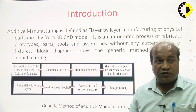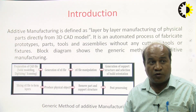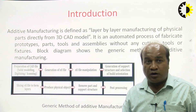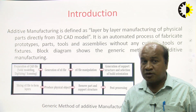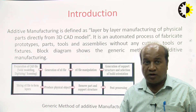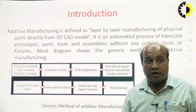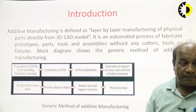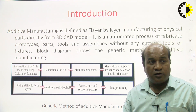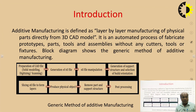As you know, additive manufacturing is defined as layer by layer manufacturing of physical parts directly from a 3D CAD model. It is an automated process to fabricate prototype parts, tools and assemblies without any cutters, tools or fixtures. A block diagram shows the generic method of additive manufacturing. First, we need a CAD model, which we can prepare using any CAD software — through solid modeling, digitizing or scanning.